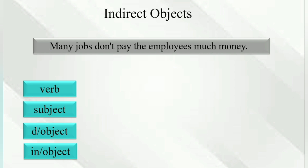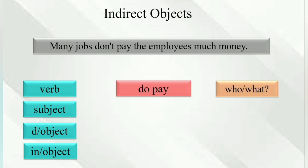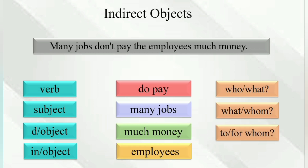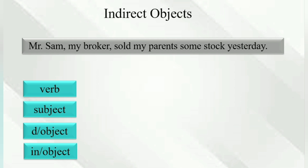'Many jobs don't pay the employees much money.' Verb: do pay. Who do pay? Many jobs. Many jobs do pay what? Much money. Much money to whom? Employees. So 'employees' is the indirect object.